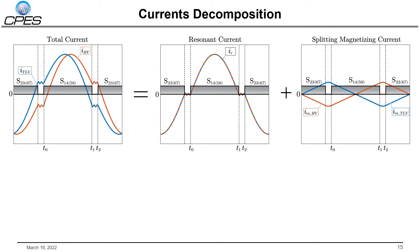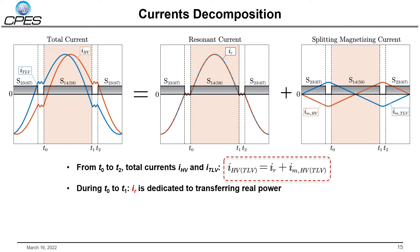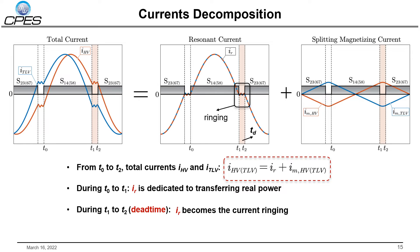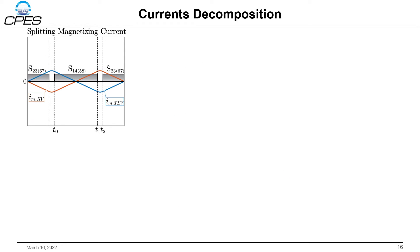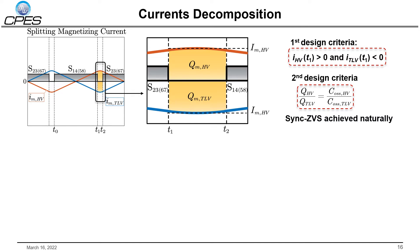To design a ZVS transition with a certain load, current decomposition should be explained. With a given load, the total current can be decomposed into two parts: the resonant current, which transfers real power, and the splitting magnetizing currents, which are dedicated to realizing ZVS. During T0 to T1, the resonant current transfers real power, and during T1 to T2, the resonant current becomes current ringing caused by resonance between leakage inductance and output capacitance. At zero load, the magnetizing current distribution follows the output capacitance value and sync ZVS can be achieved naturally.